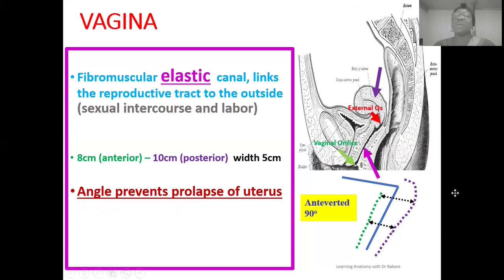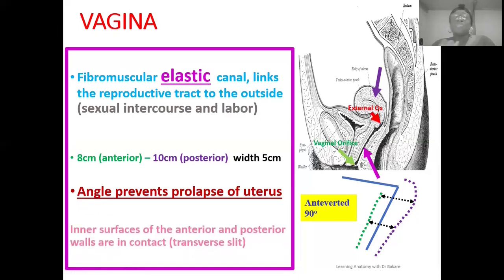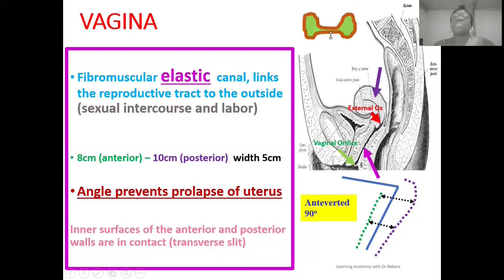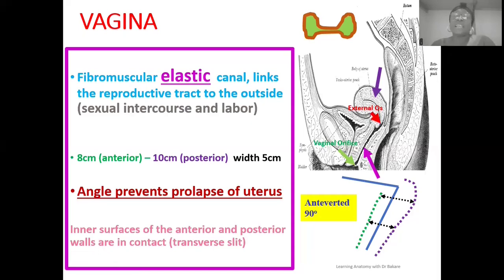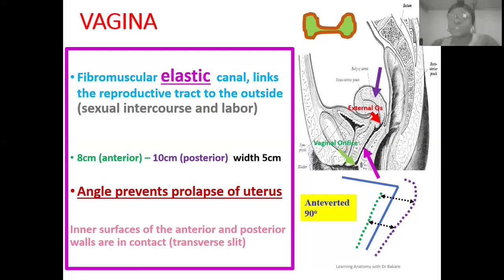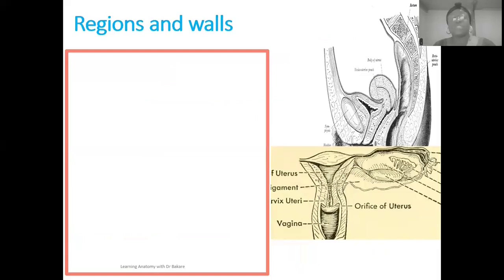It is also important to highlight that the anterior and the posterior wall of the vagina canal are seen to be in contact with each other, creating a transverse slit around this region. Unlike the uterus, where the endometrial lining prevents adhesion and keeps the cavity open, in the vagina canal the anterior and posterior walls are in contact. This is to prevent structures from having easy free flow into the vaginal space and from ascending into the reproductive tract.